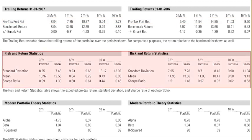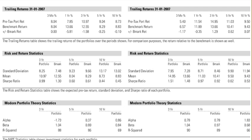The risk return statistics are next on the report. This area contains three metrics: the standard deviation, the mean return, and the Sharpe ratio for each portfolio. You can see the values for these three metrics over the past 3, 5, and 10 year periods. Standard deviation is a measure of risk — the lower the standard deviation, the better. Note that the proposed portfolio has a lower standard deviation across all time periods than the current portfolio.